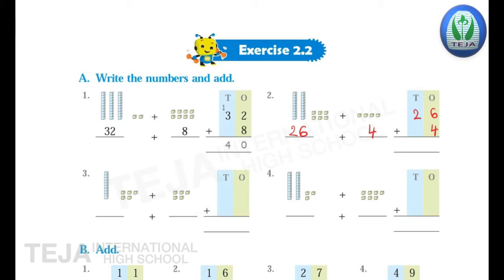6 plus 4 — add the numbers in the 1's place: 6 and 4. Now keep 6 in your mind and count 4 more: 7, 8, 9, 10. If you write 10 here it is wrong, so we will carry 1 here and write 0 in the 1's place. Now in the 10's place the numbers are 1 and 2. 2 plus 1 is 3, so the answer is 30. 26 plus 4 is 30.